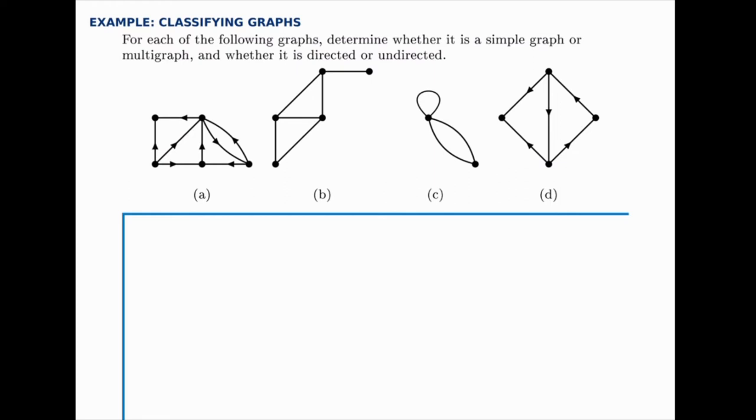So right away, the easiest thing might be to look through and see which ones are directed and which ones are undirected. Clearly, the first and last ones, A and D, have arrows on all the edges. So those are directed graphs, and B and C are both undirected.